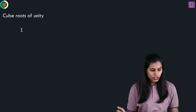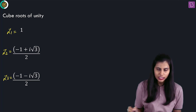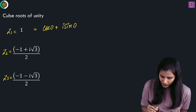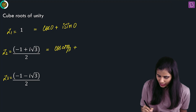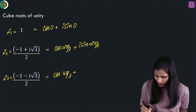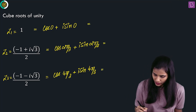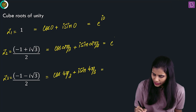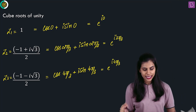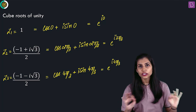We've computed the cube roots of unity in Cartesian form. Now let's write them in polar form: z1 is cos 0 plus iota sin 0; z2 is cos 2 pi by 3 plus iota sin 2 pi by 3; and z3 is cos 4 pi by 3 plus iota sin 4 pi by 3. In Euler form: z1 is e to the power iota 0; z2 is e to the power iota times 2 pi by 3; and z3 is e to the power iota times 4 pi by 3. You should be aware of each of these representations.